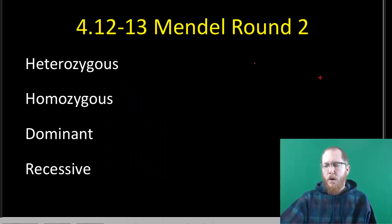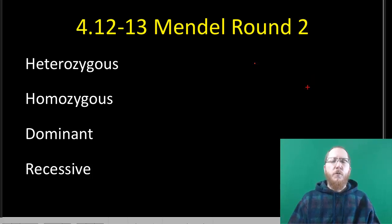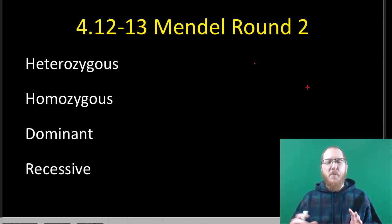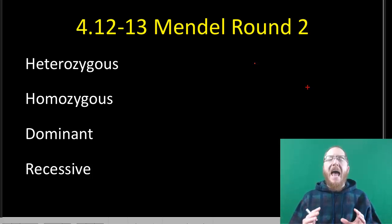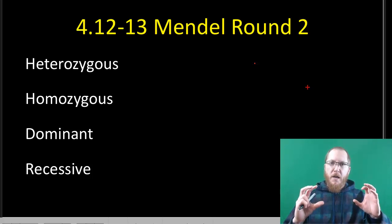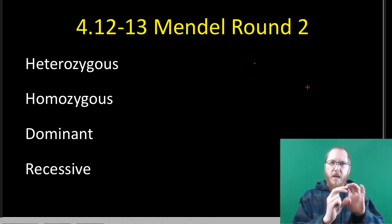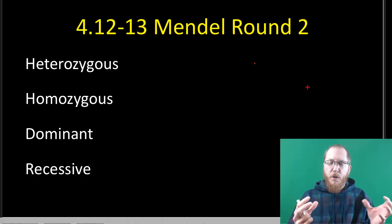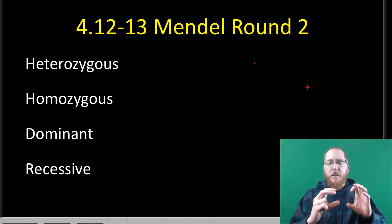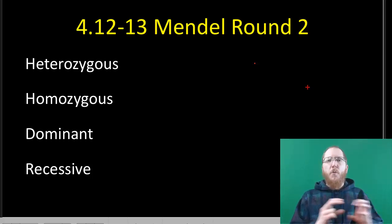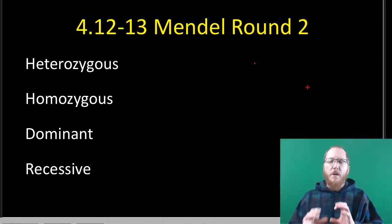Welcome to sections 4.12 and 4.13. What we're going to discuss in these sections is mostly terminology needed for sections 4.14 and 4.15. We also need to talk about what Mendel did after his first set of experiments — the monohybrid cross — where he crossed purebred tall with short, got all tall in the F1, then crossed those two heterozygotes to get that 3 to 1 ratio: three talls, one short, in the F2s.